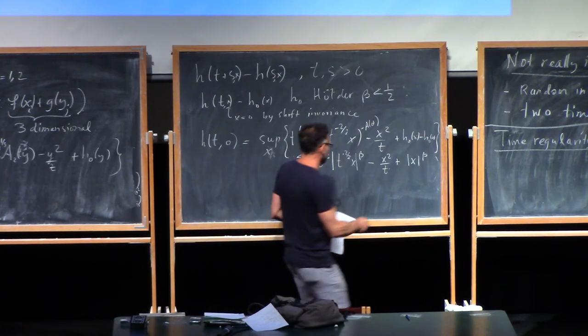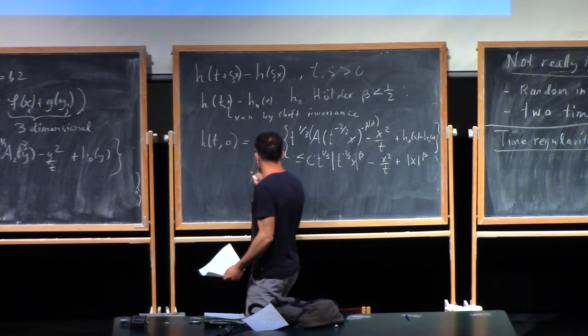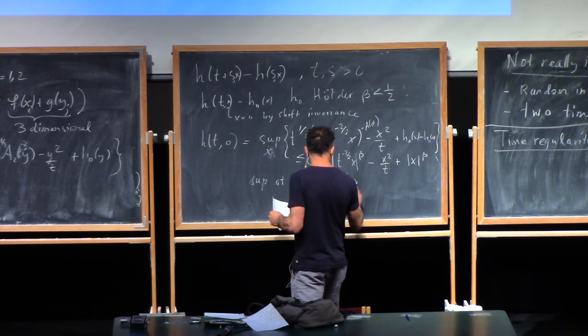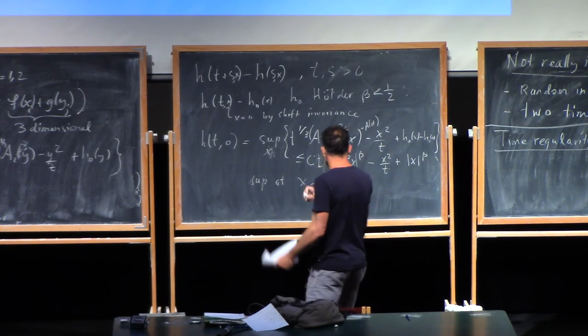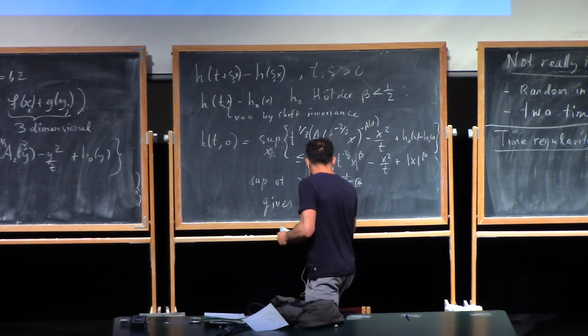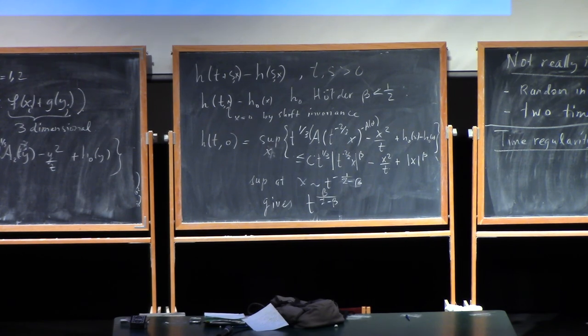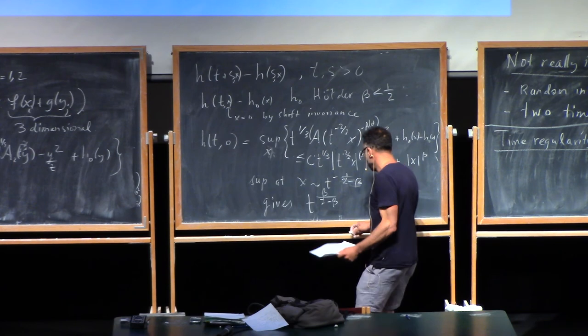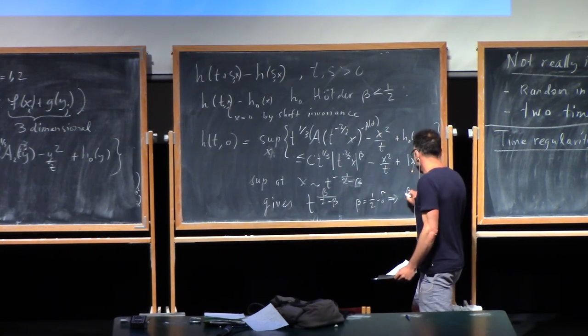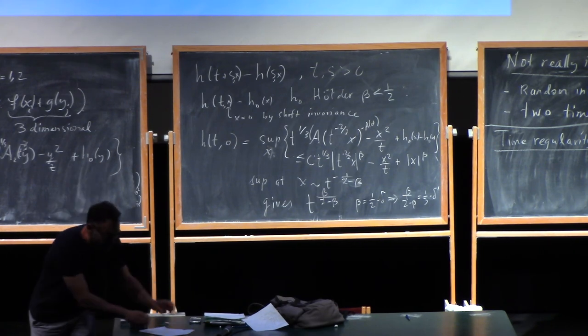Anyway, so there's that, right? And now you just do the variational problem. And you immediately see that the sup appears that, the sup is at X is about T to the 1 over 2 minus β. Sorry, it's 2 minus β. And the sup gives T to the β over 2 minus β. And as β goes up to a half, that thing just goes to T to the 1/3. Right? So β equals one half minus δ just gives β over 2 minus β equals 1/3 minus δ prime. So that proves the time regularity and it's not a shock.